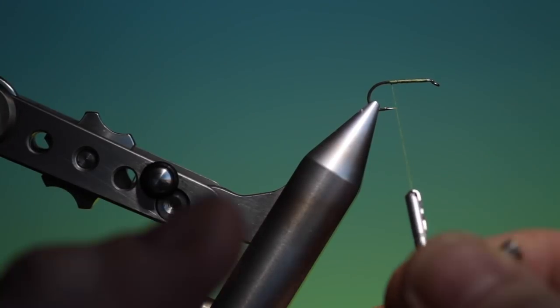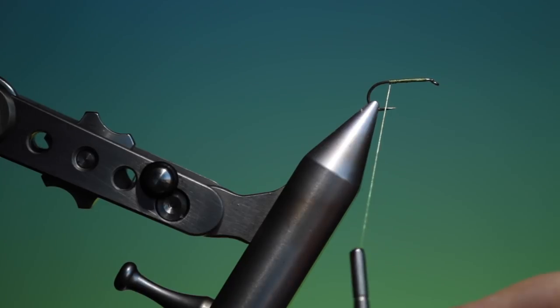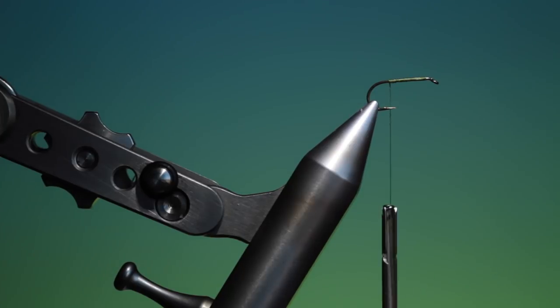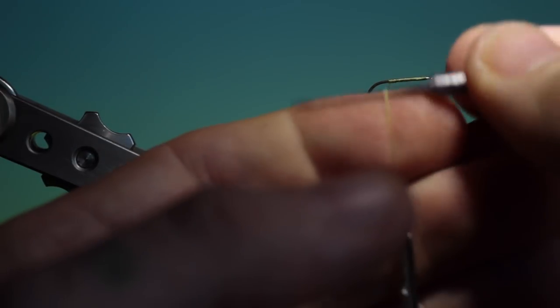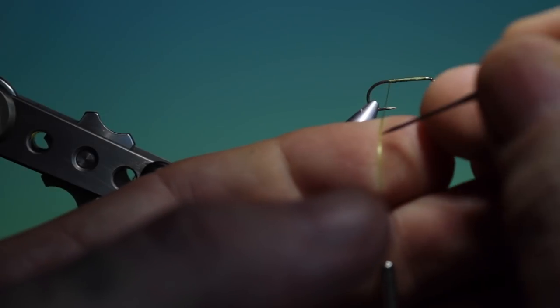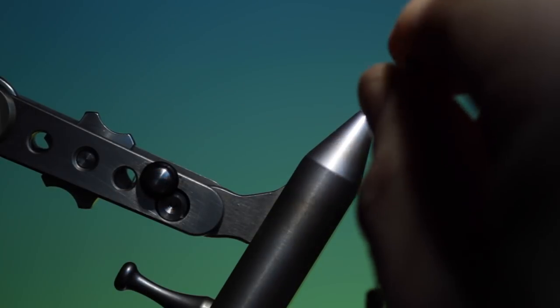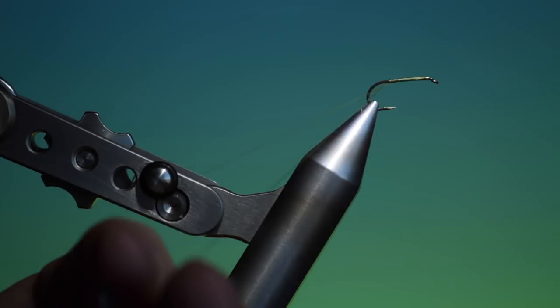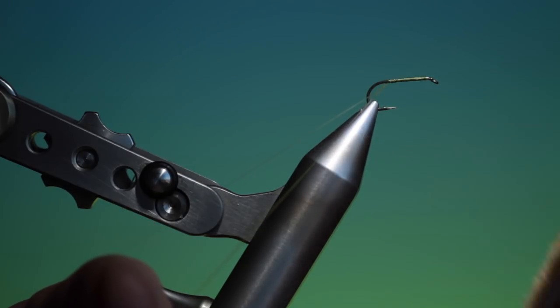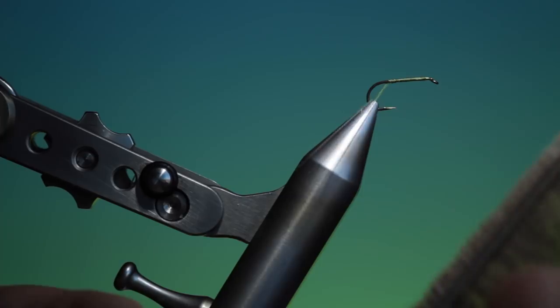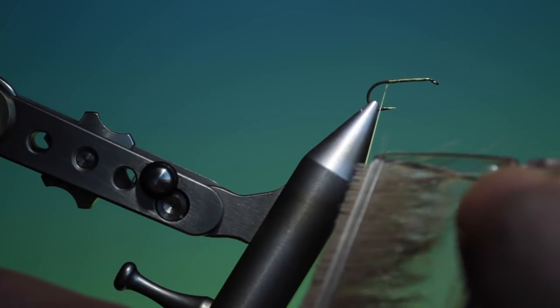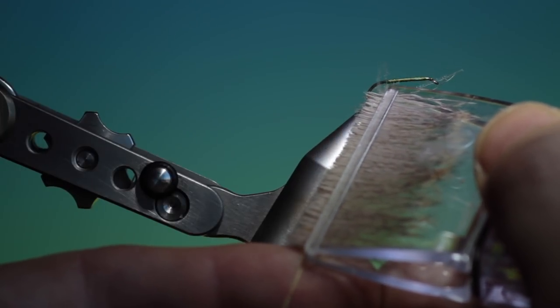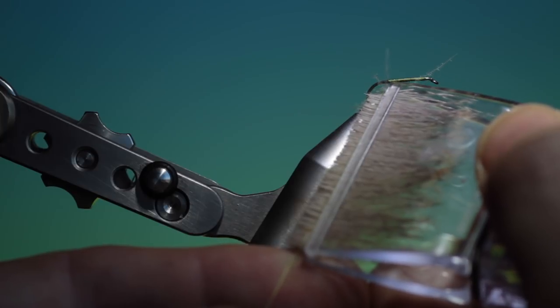We firstly take our tying thread and spin our bobbin anti-clockwise. This will give your thread a flat profile. We take our dubbing needle like this, split the thread, open it up, keep it open with your finger. There's the CDC and deer hair in one clip. We put the whole clip in between the dubbing loop and then we slide it out. It's best if you rest your fingers on the vise or your hands on the vise, just keep everything steady, keep your tying thread tight.